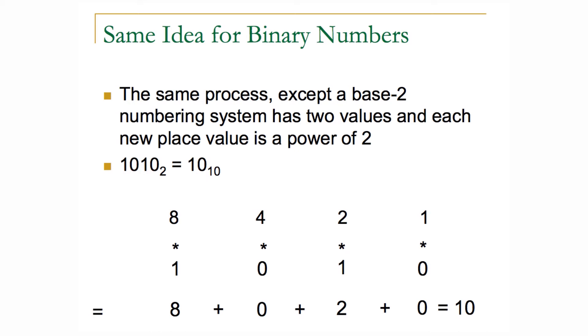Eight times one is eight, four times zero is zero, two times one is two, and one times zero is zero. So eight plus two would be ten. The same process we used with decimal numbers we can use with binary numbers. We also need to consider how to go in the reverse direction. Given a decimal number, how do we find its binary equivalent?